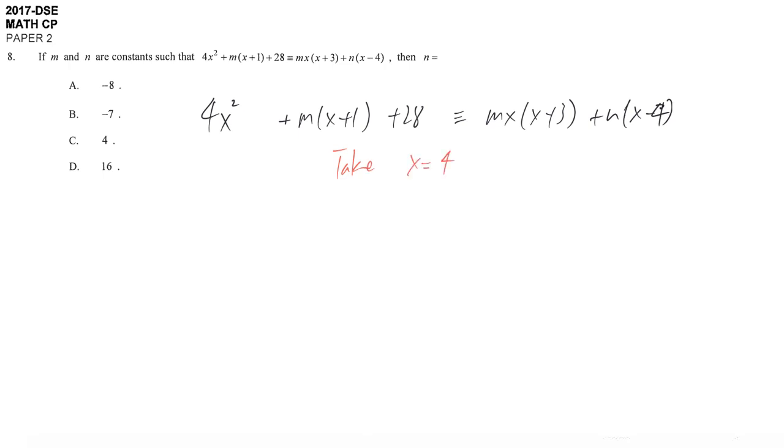Because it's identity, no matter what is x, the left hand side and right hand side are still the same. So 4 something plus m times something plus 1 plus 28 equal to m times 4, 4 plus 3 plus n, 4 minus 4.